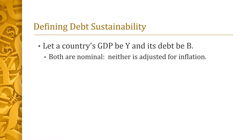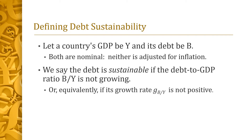Consider a country with GDP Y and debt B. Both are expressed in nominal terms, in dollars of the current year. There is no need to adjust for inflation. In particular, in this video, Y will refer to nominal GDP rather than to real GDP. We will say that the debt of this country is sustainable if the debt-to-GDP ratio, B divided by Y, does not rise over time, or equivalently, if the growth rate of the debt-to-GDP ratio is not positive.